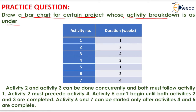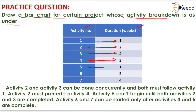In this table, the activity number and duration of each activity in weeks is shown. For activity 1, the duration is 1 week; for activity 2, 2 weeks; for activity 3, 4 weeks; for activity 4, 3 weeks; for activity 5, 1 week; for activity 6, 2 weeks; and for activity 7, 4 weeks.